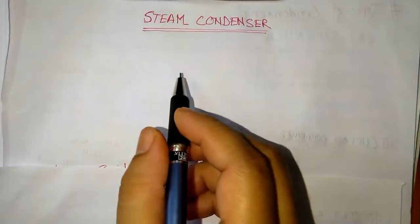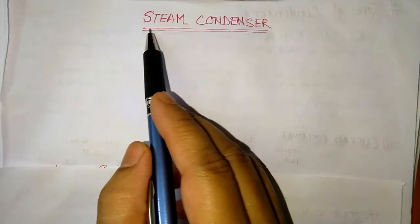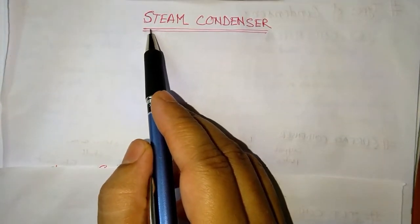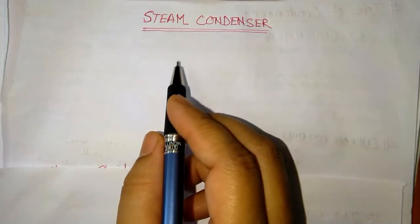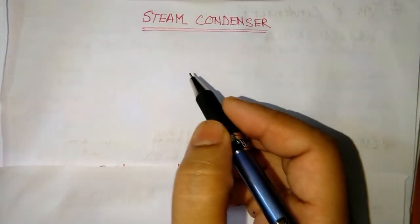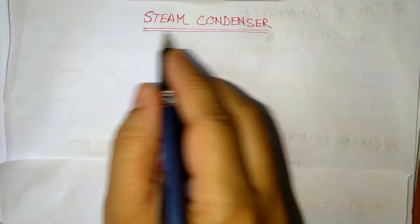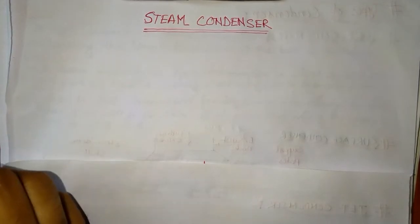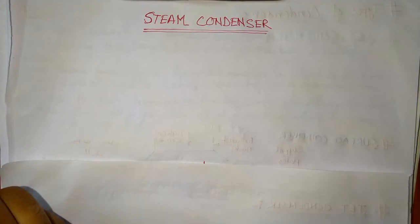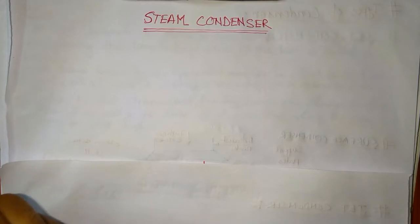Today we will be discussing about the condenser, one of the important main components of a steam power plant. So basically, a steam condenser is a closed vessel where exhaust steam from the turbine is condensed, and it operates at a pressure lower than atmospheric pressure.